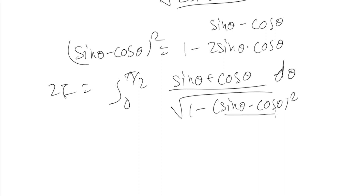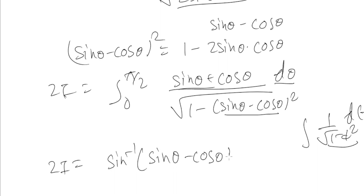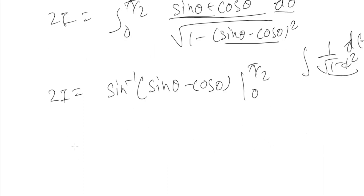If we substitute (sin θ − cos θ) equal to t, then (cos θ + sin θ) dθ becomes dt. So the integral becomes 1 / √(1 − t²) dt, which is the anti-derivative of sin⁻¹(t). Therefore we can write 2I equal to sin⁻¹(sin θ − cos θ), with limits from 0 to π/2.